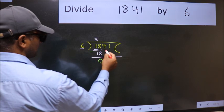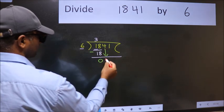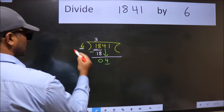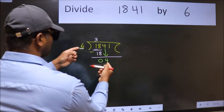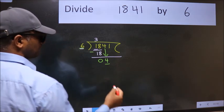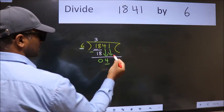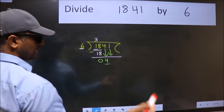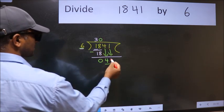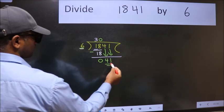After this bring down the beside number. So 4 down. Now here we have 4 and here 6. 4 is smaller than 6. So we should bring down the second number. And the rule to bring down second number is put 0 here. Then only we can bring this number down. So 41.